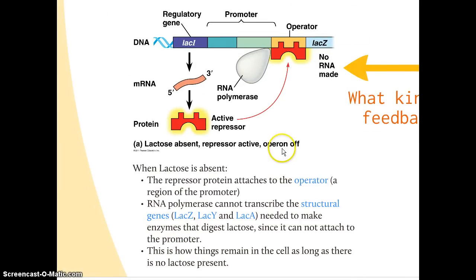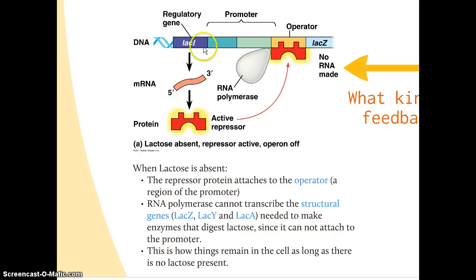Here we see an image of the lac operon. The enzymes made to break down lactose are shown, along with the promoter where RNA polymerase attaches and slides along the DNA to make messenger RNA. Back here is a regulatory gene that produces a special protein called a repressor. The repressor fits into the operator, and when attached, it prevents RNA polymerase from attaching — which prevents transcription, so those genes aren't expressed.